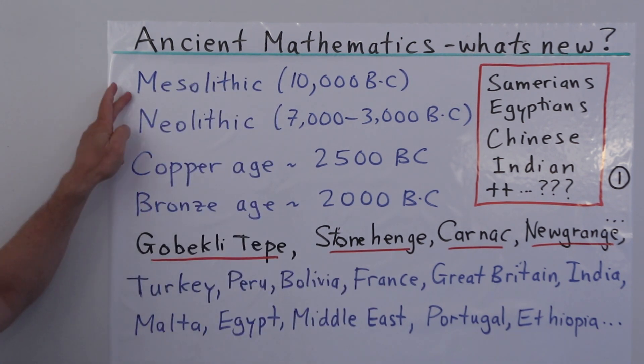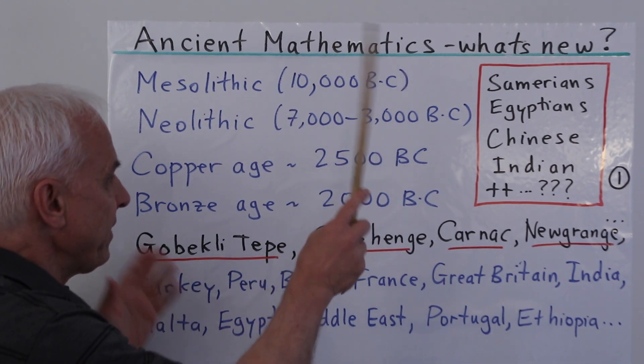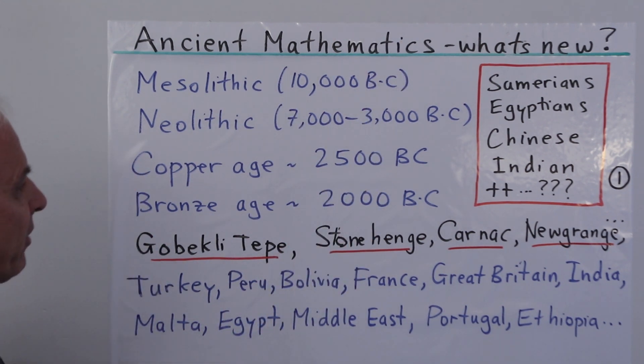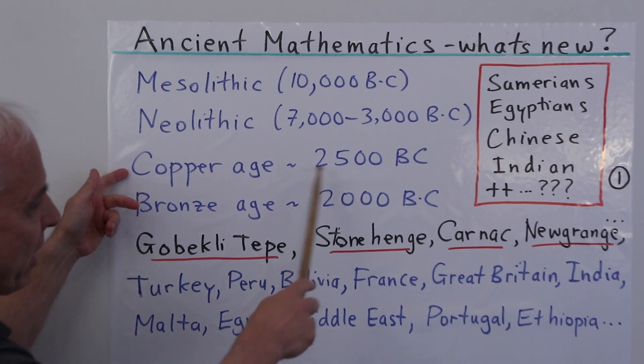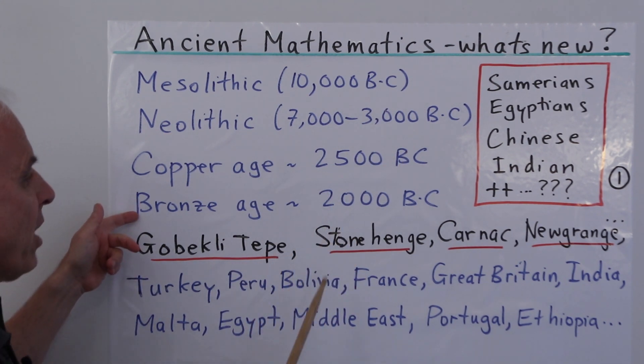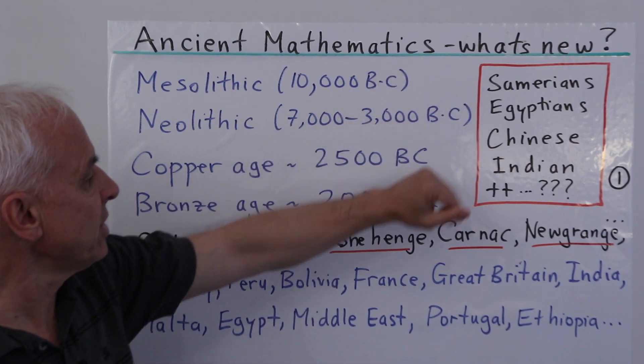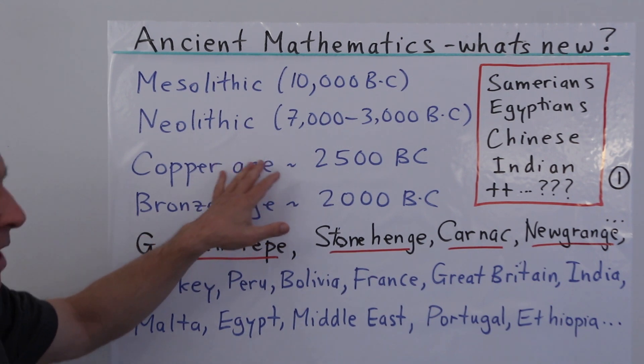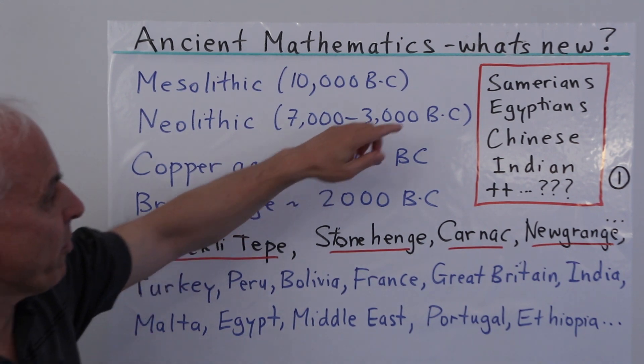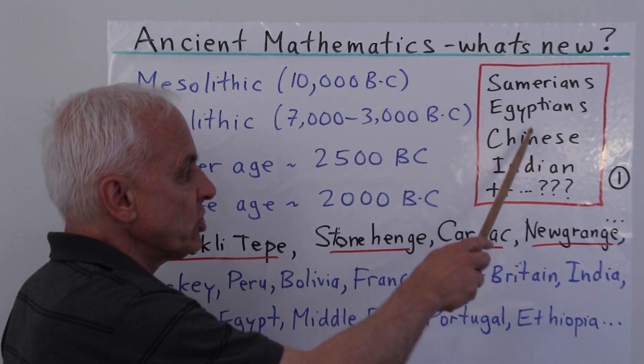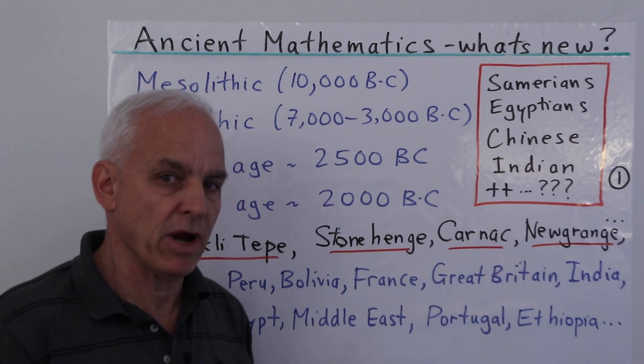Ancient times: the Mesolithic period from around 10,000 BC, Neolithic period around 7,000 to 3,000 BC, Copper Age around 2500 BC, Bronze Age around 2000 BC, and the Iron Age following that. We have ancient civilizations starting around the Copper Age, a little bit before perhaps - Sumerians, Egyptians, Chinese, Indian, and perhaps others as well.